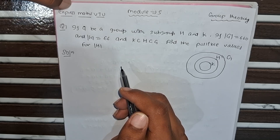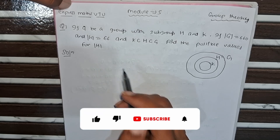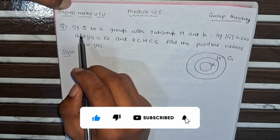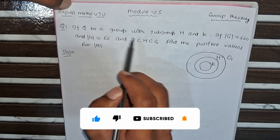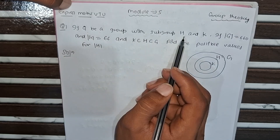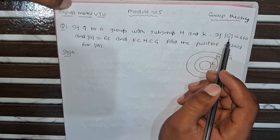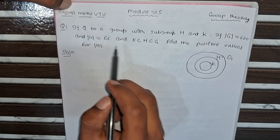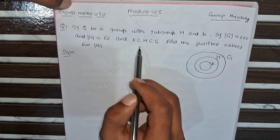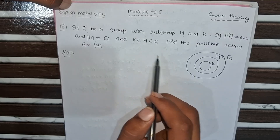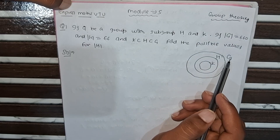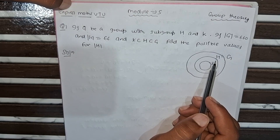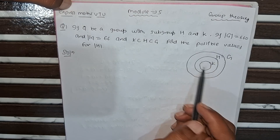Today we are going to solve another important problem from module 5, group theory. The question is: if G be a group with subgroups H and K, where the order of G equals 660 and the order of K equals 66. G is a group, inside G there is a subgroup H, and inside H there is another subgroup K.